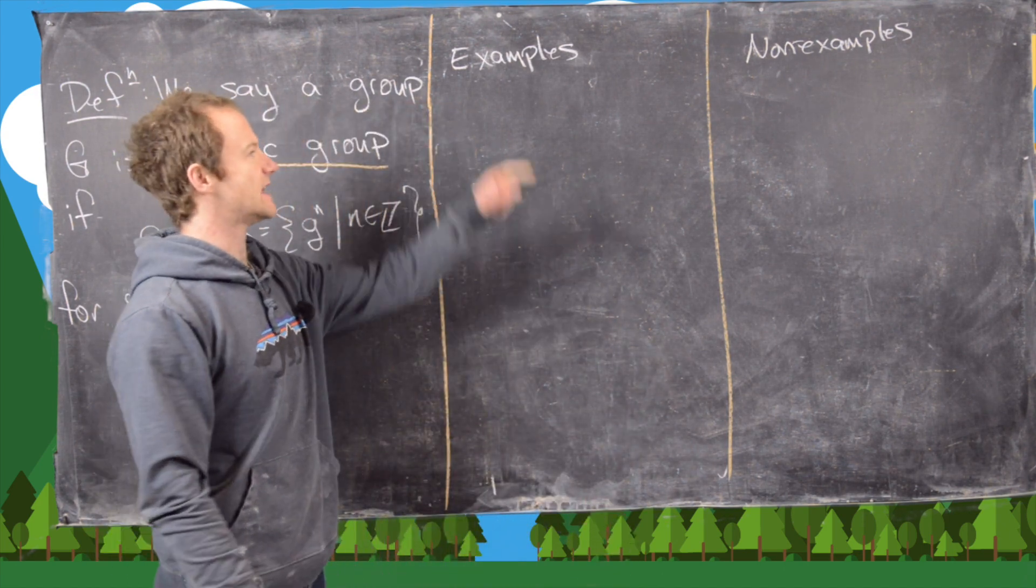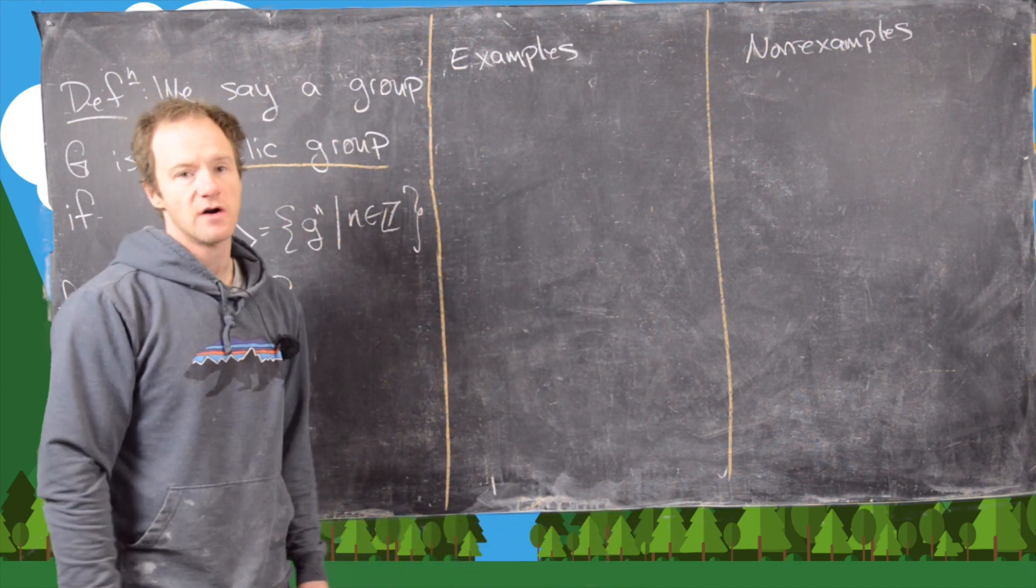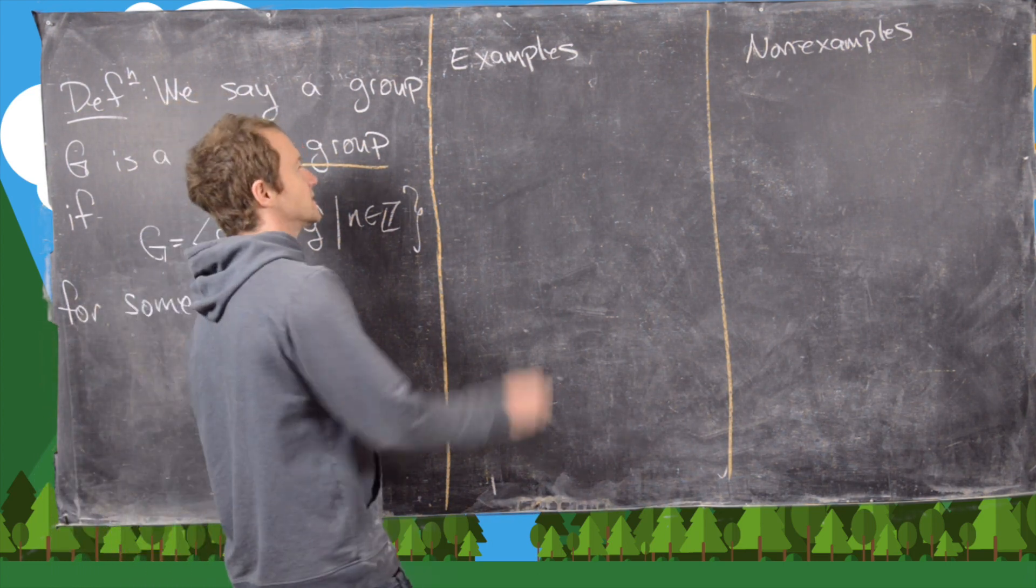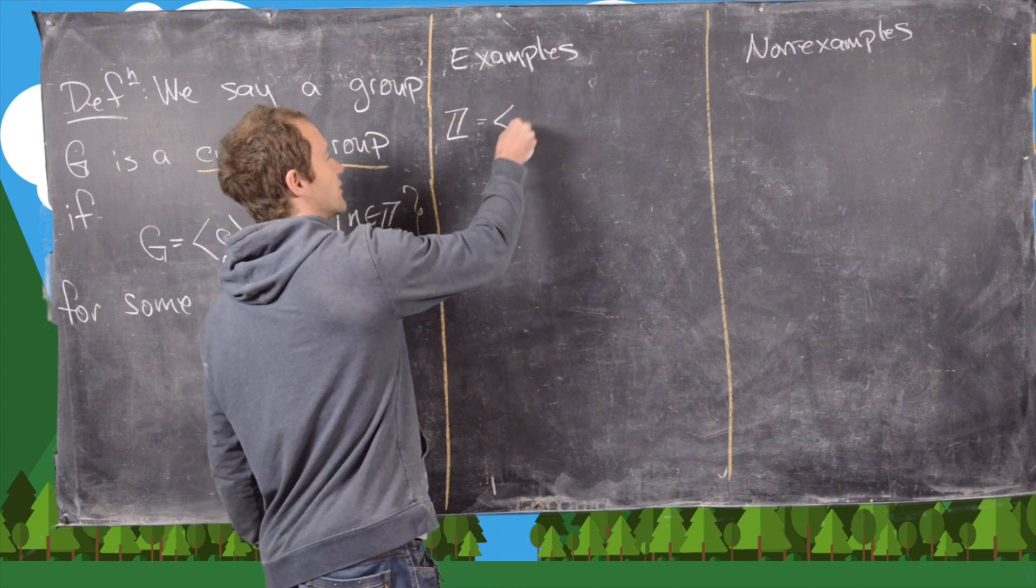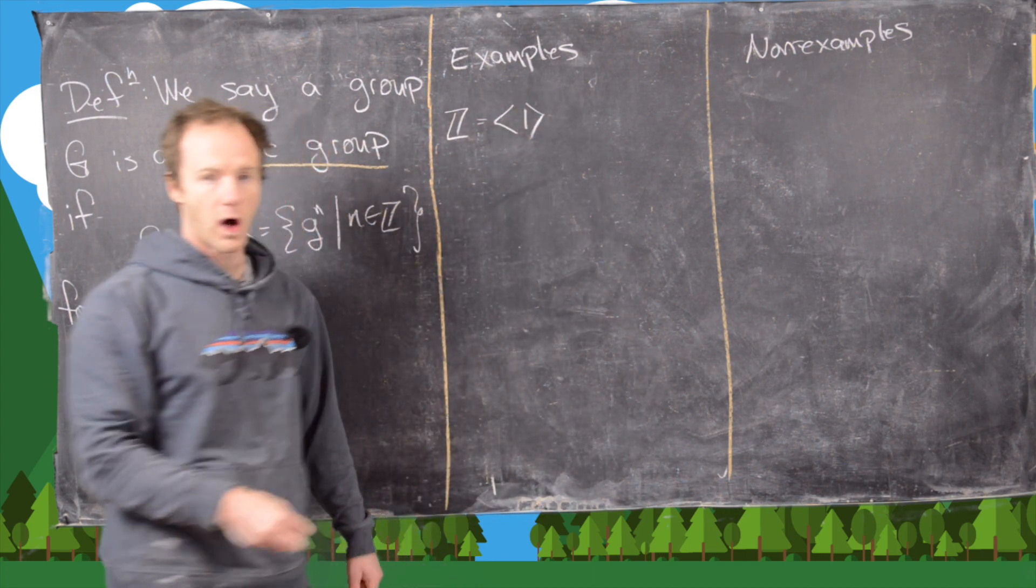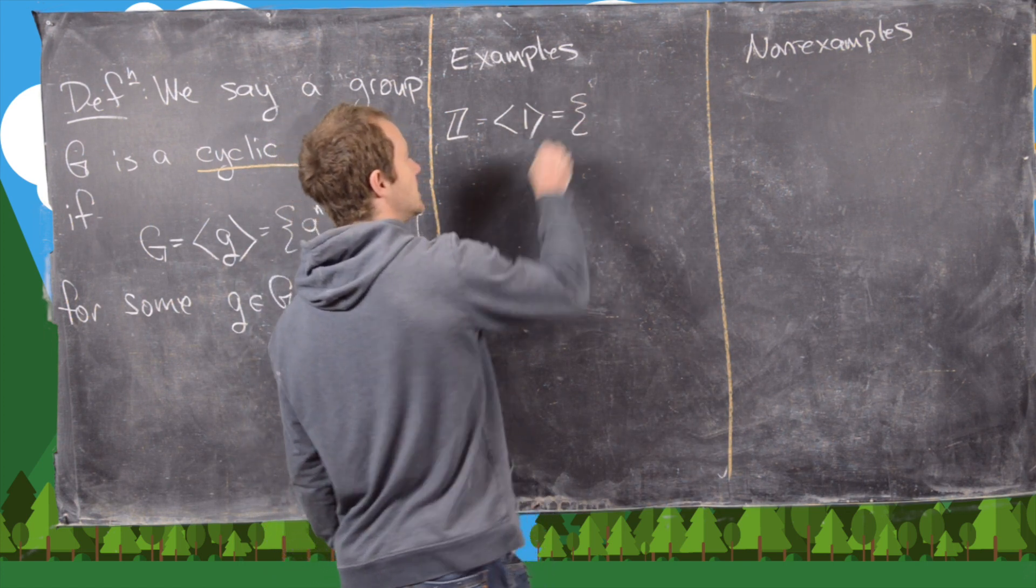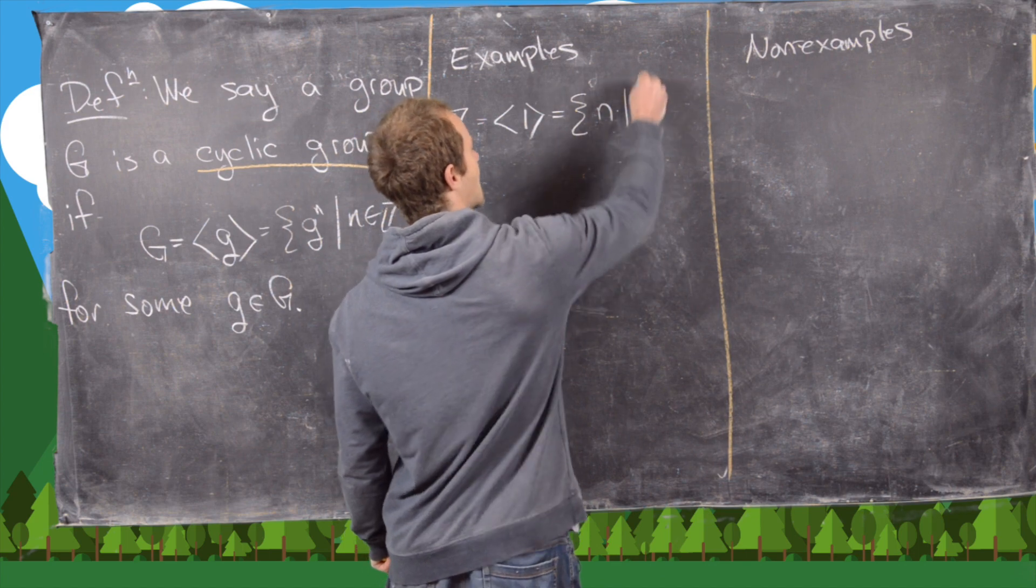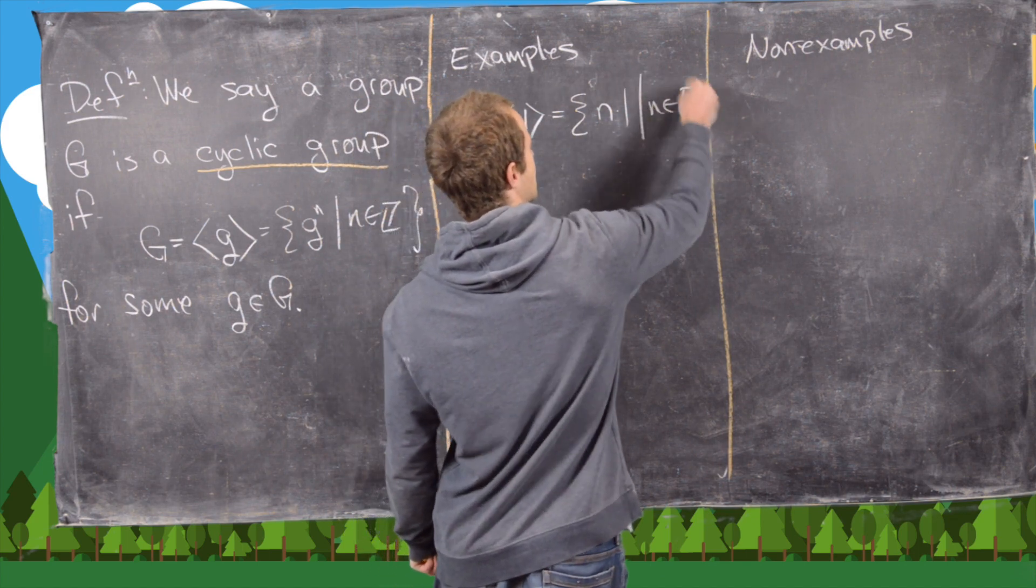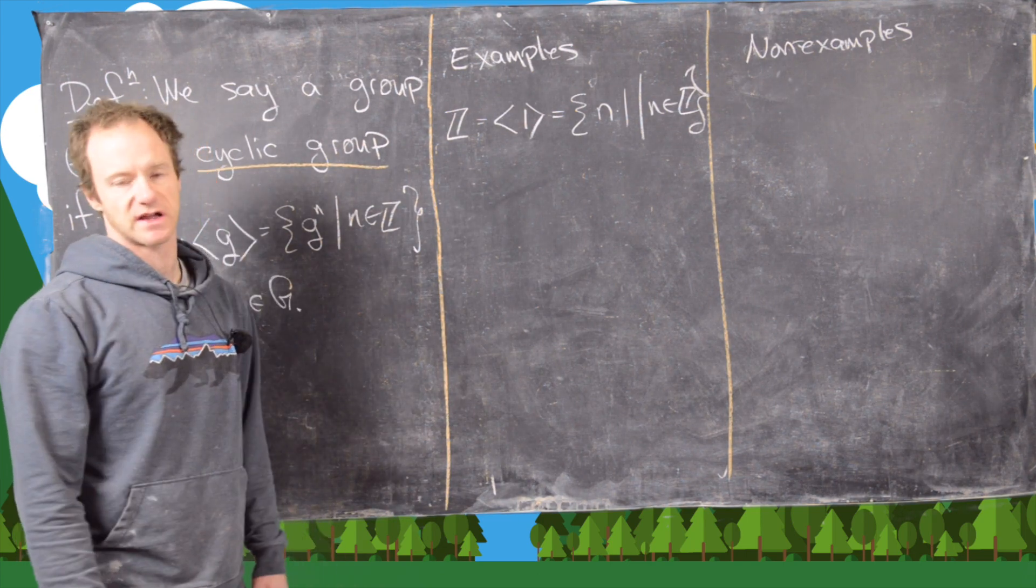Now we want to look at some examples and non-examples of cyclic groups. First, notice that Z is a cyclic group, and it's the cyclic group generated by the element one. That's because here our operation is addition, and so that means everything is written in terms of n times one for n in the integers. But that just recovers the definition of the integers.